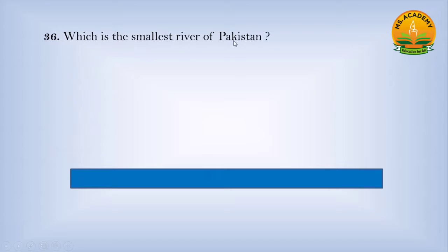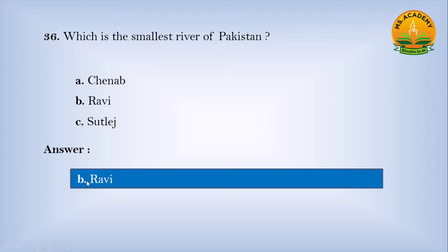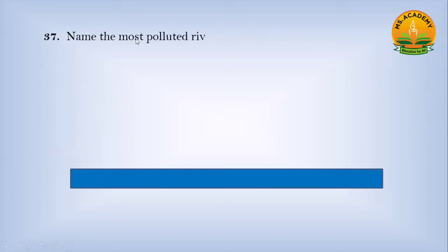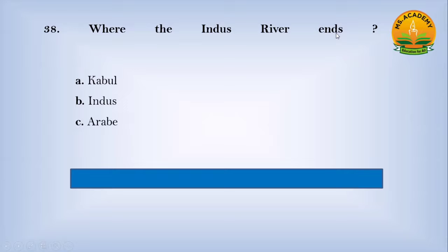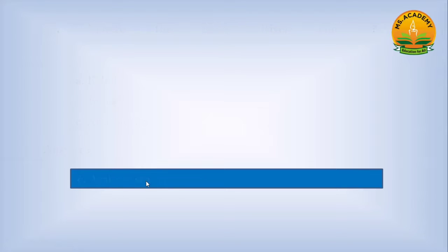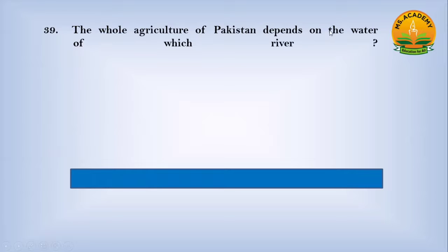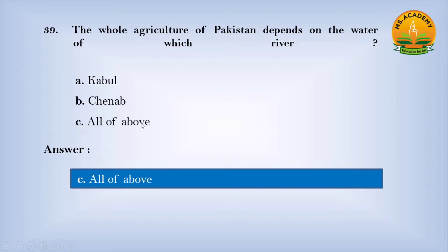Which is the smallest river of Pakistan? Option A Chenab, option B River Ravi, option C Sutlej — answer is B, Ravi. The whole agriculture of Pakistan depends on the water of which river? Option A Kabul, option B Chenab, option C all of the above — answer is C, all of the above, meaning Kabul and Chenab.